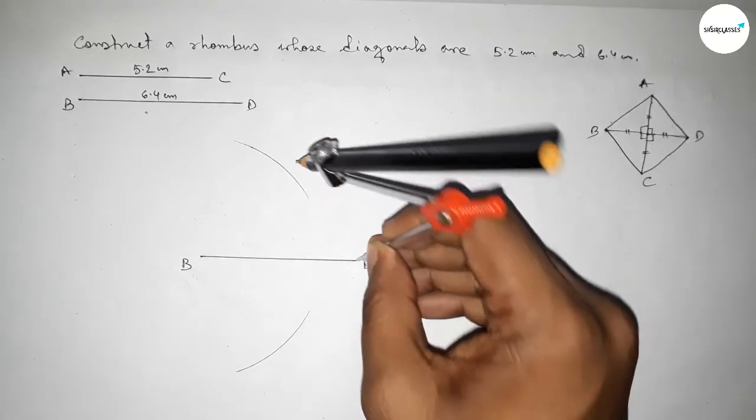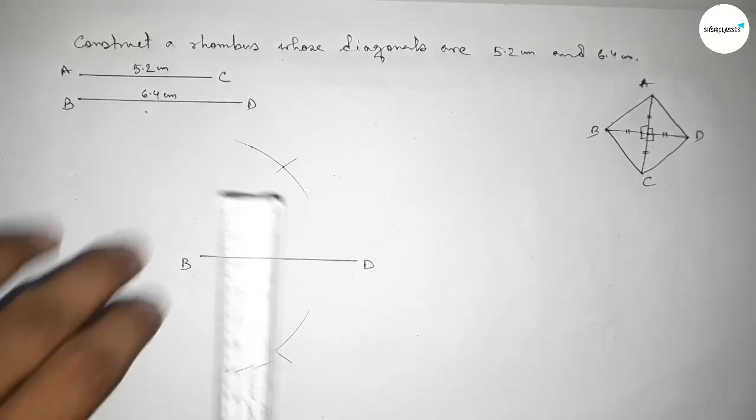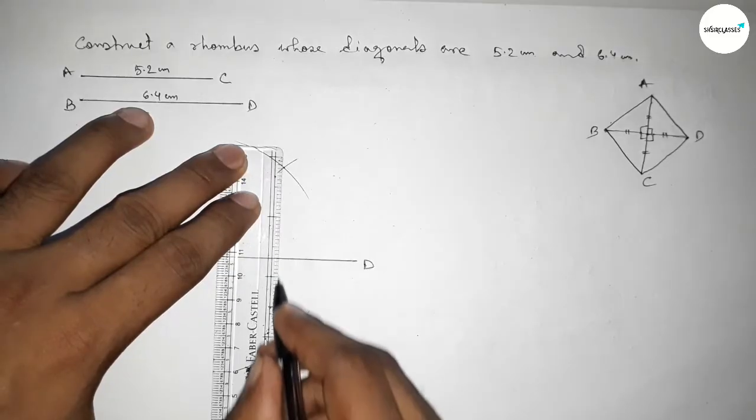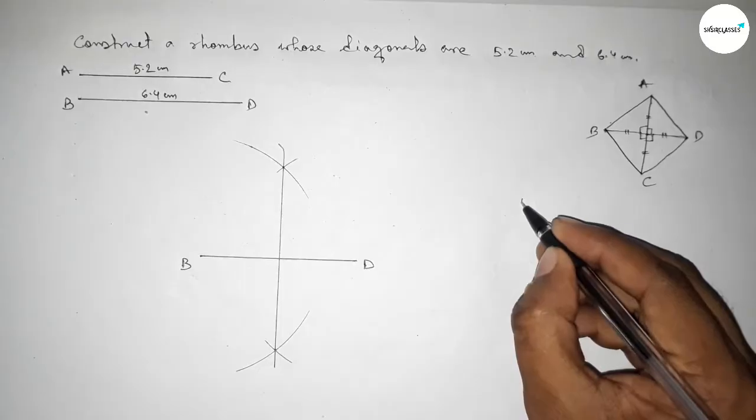So first bisecting the diagonal with same length, putting the compass here and cut here and cut here. Both the curves intersect at two points. Now joining this line which bisects the diagonal BD at a point.